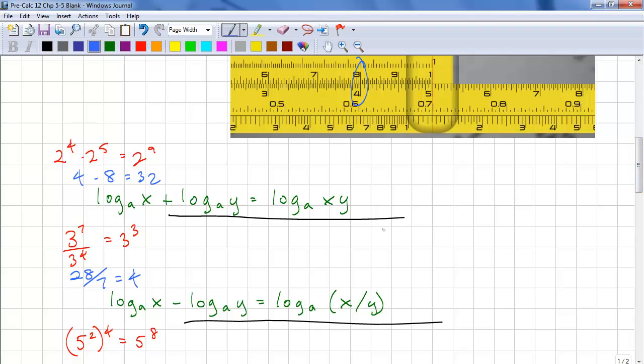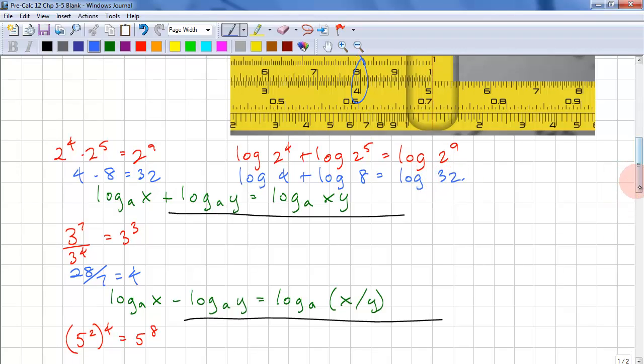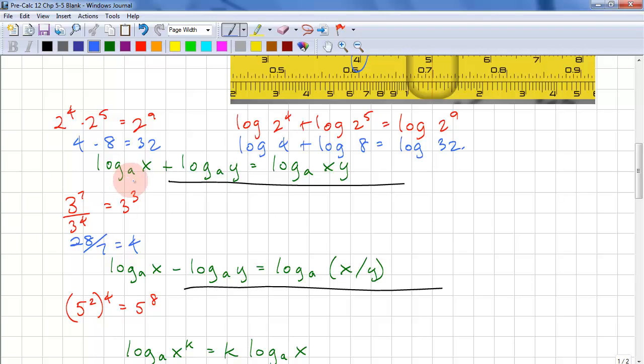Let's look at some more examples with a slide rule. We have log 2 to the power of 4 plus log 2 to the power of 5 equals log 2 to the power of 9. And on the next line, we have log 4 plus log 8 equals log 32. The rule is we have to have the same base. So log a of x plus log a of y equals log a of x times y.